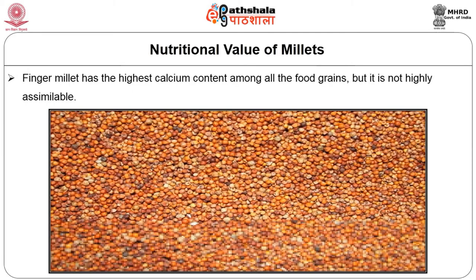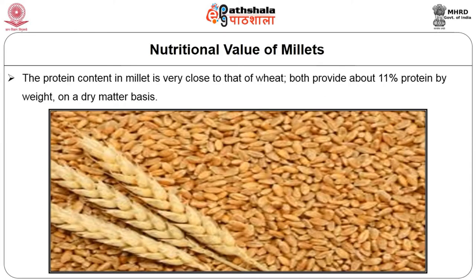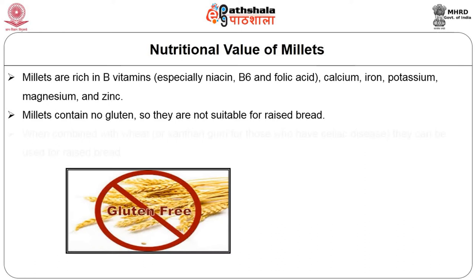Finger millet has the highest calcium content among all food grains, but it is not highly assimilable. The protein content in millet is very close to that of wheat — both provide about 11% protein by weight on a dry matter basis. Millets are rich in B vitamins, especially niacin, vitamin B6 or pyridoxine, folic acid, calcium, iron, potassium, magnesium, and zinc.